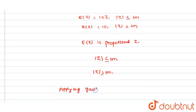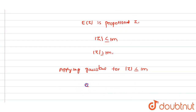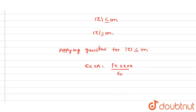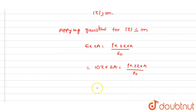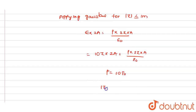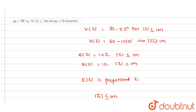Applying Gauss's law for |z| ≤ 1 m: E × 2A = ρ × 2z × A / ε₀. Substituting E = 10z gives 10z × 2A = ρ × 2z × A / ε₀, so ρ = 10ε₀. For |z| ≥ 1 m, applying Gauss's law gives ρ = 0.